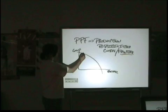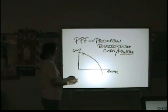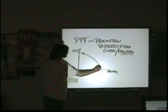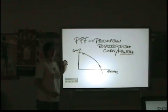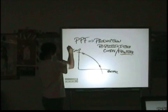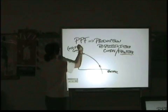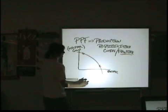But if you are closer to this axis, you're producing more military goods. If you're closer to this axis, you're producing more civilian goods. But you may hear it expressed as guns and butter, military and civilian.